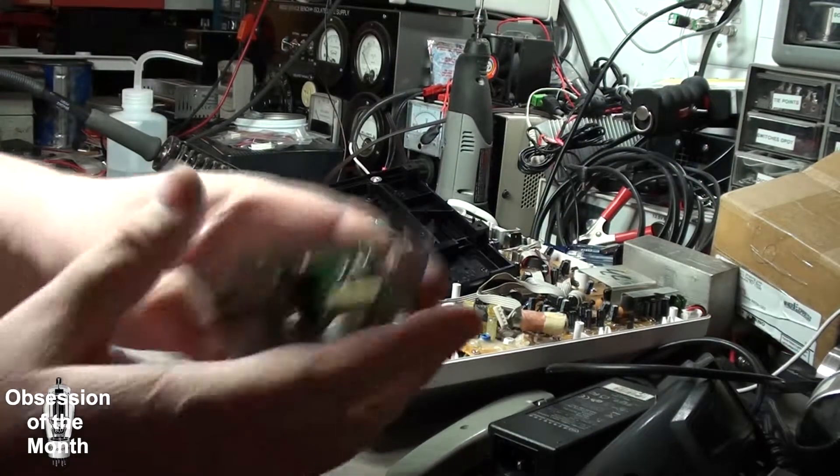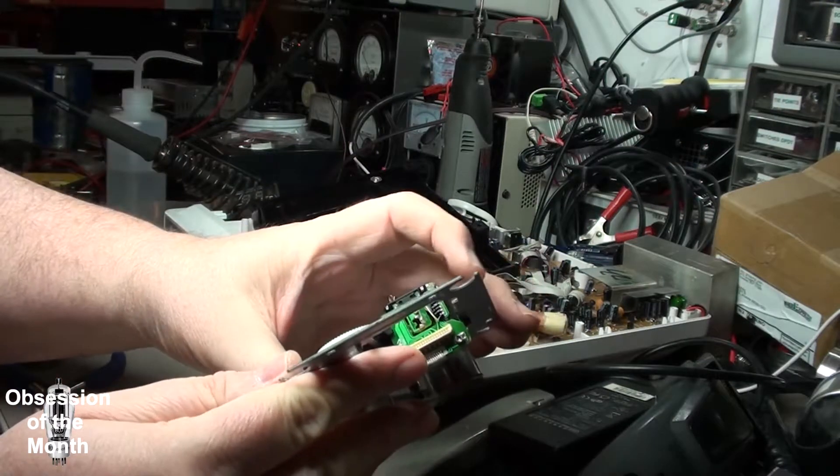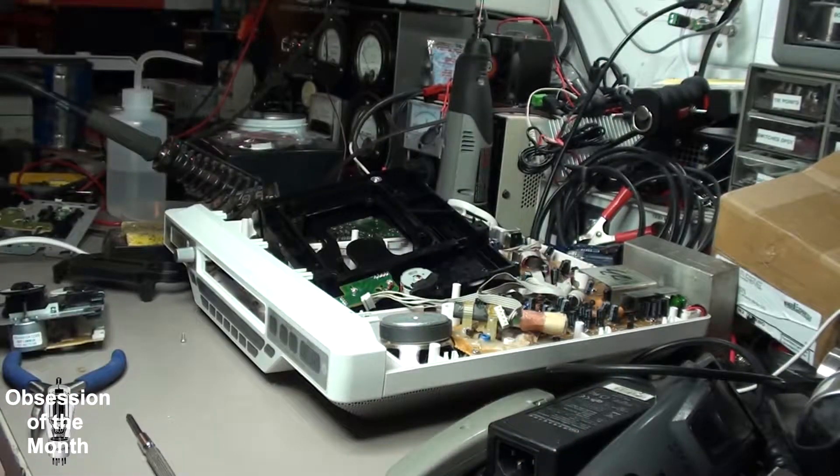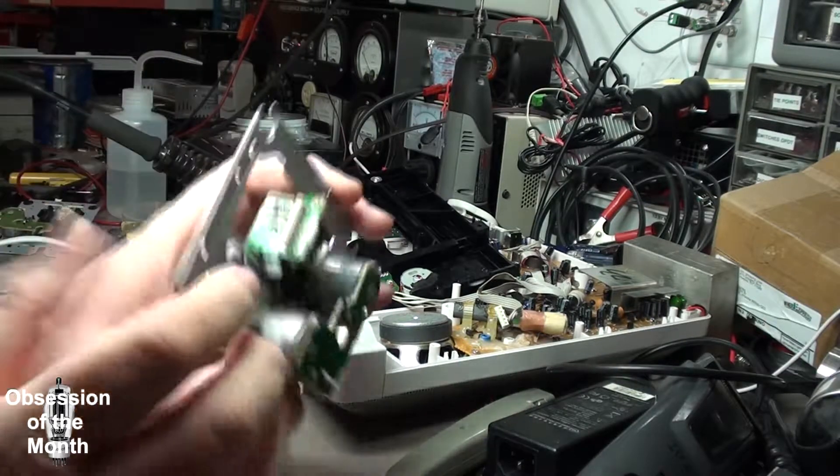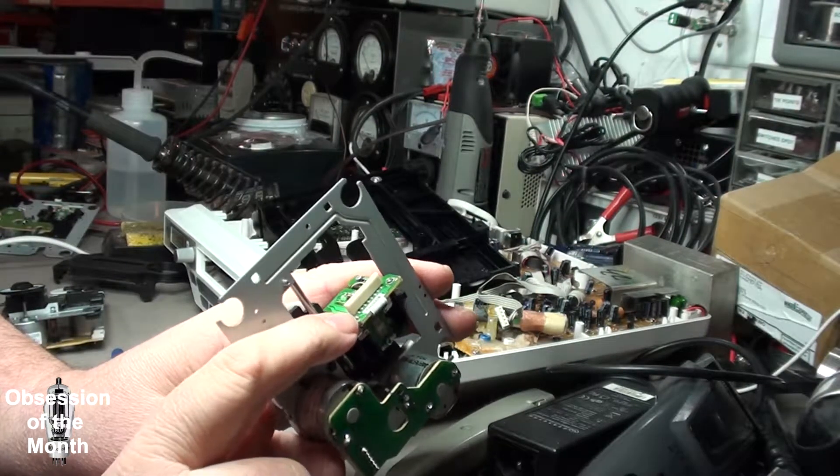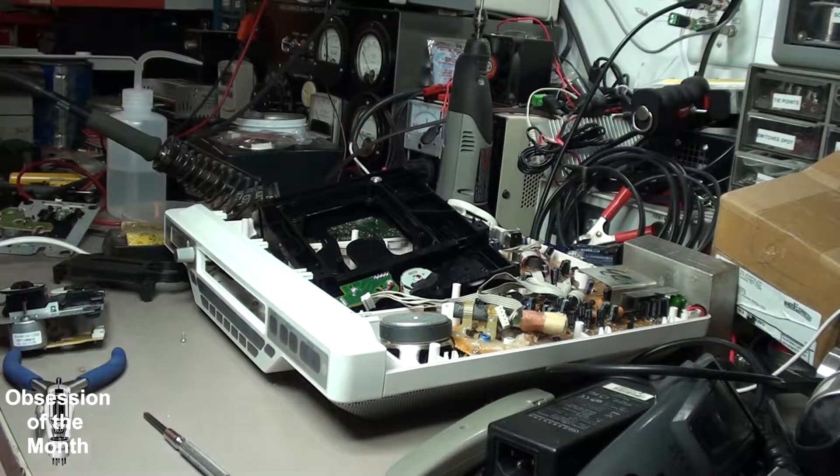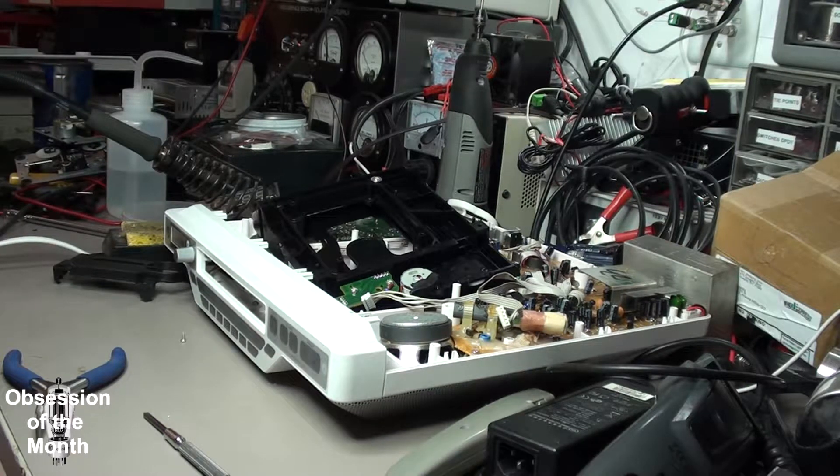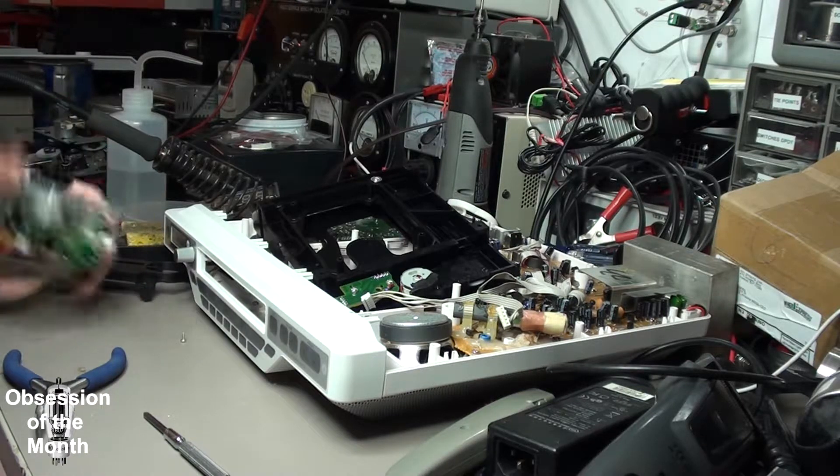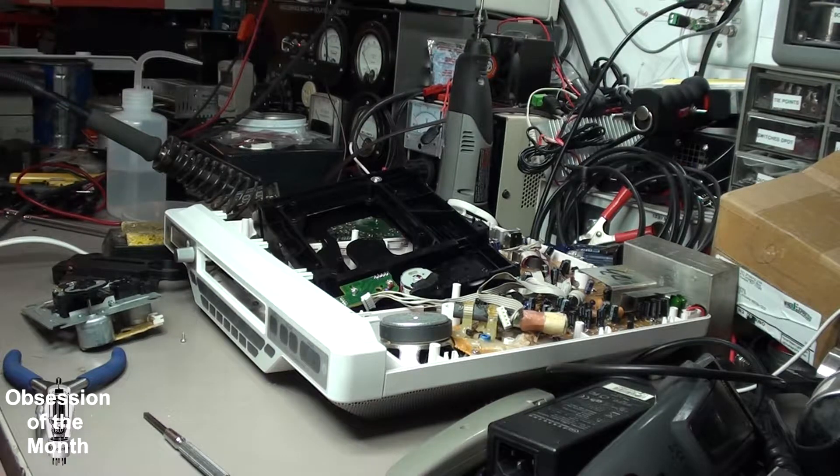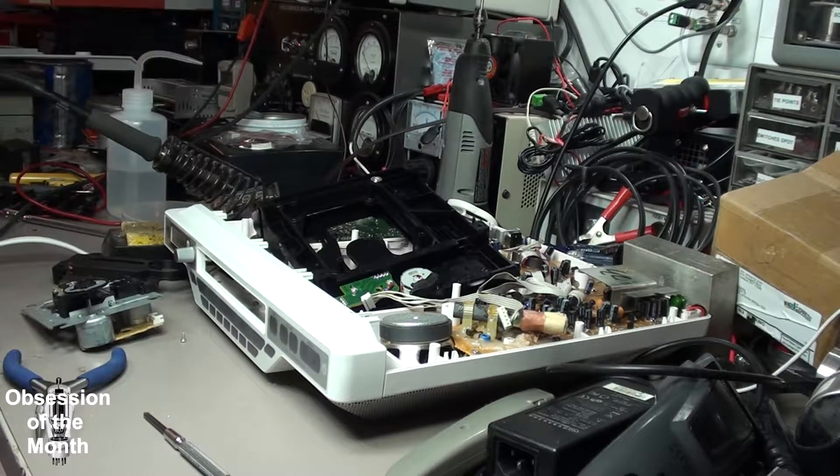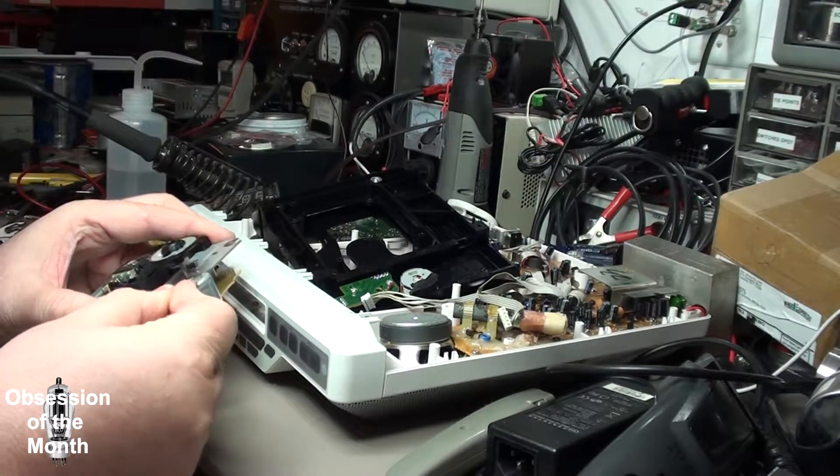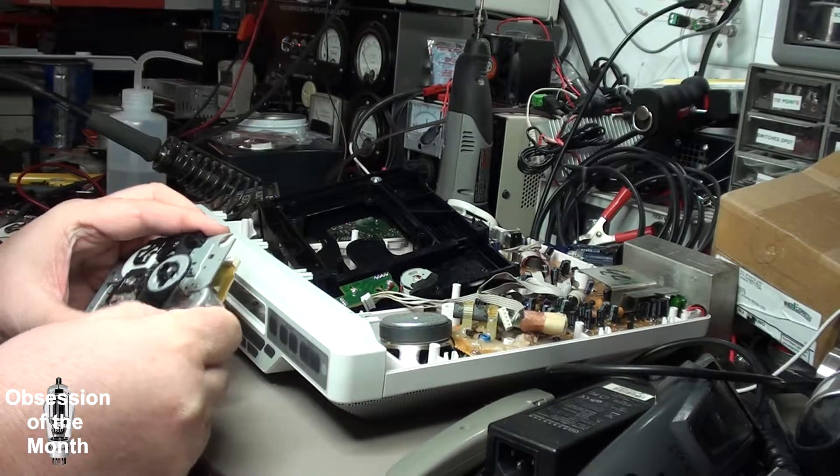One thing to note on these is that right here, there's a little blob of solder right there. When I'm done, that has to be removed or else the laser won't work. Its purpose is to protect the diode from static discharge. Supposedly these laser diodes are extremely susceptible to static when they're out of circuit.